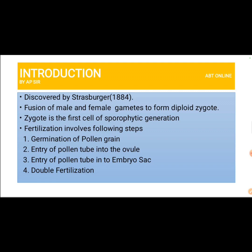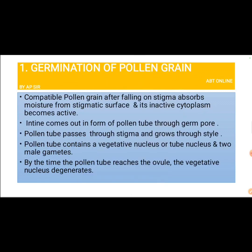The first step is germination of the pollen grain into a pollen tube. Once the compatible pollen grain falls on the stigma, it absorbs moisture from the stigmatic surface and its inactive cytoplasm becomes active. The intine comes out in the form of a pollen tube through the germ pore. The pollen tube then pierces through the stigma and grows through the style, containing a tube nucleus and two male gametes.